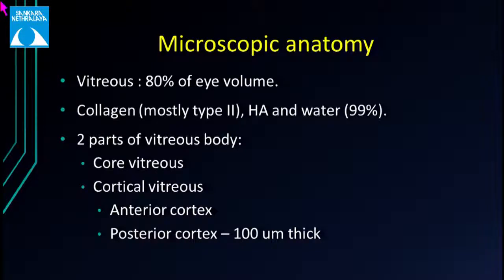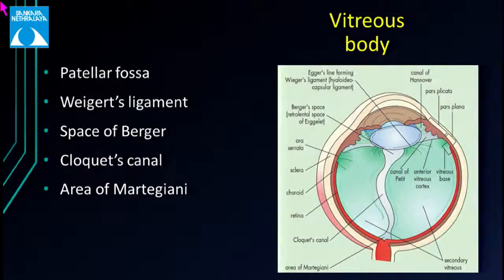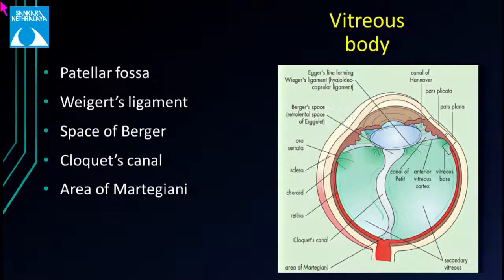There are two parts of the vitreous body: the core vitreous and the cortical vitreous, which can be divided into the anterior hyaloidal membrane and the posterior hyaloidal membrane, which is 100 microns thick above the ILM. This diagram shows the vitreous body. We have the patellar fossa, which houses the crystalline lens, and Weigert's ligament behind that — a band of firm vitreous attachment just behind the patellar fossa.